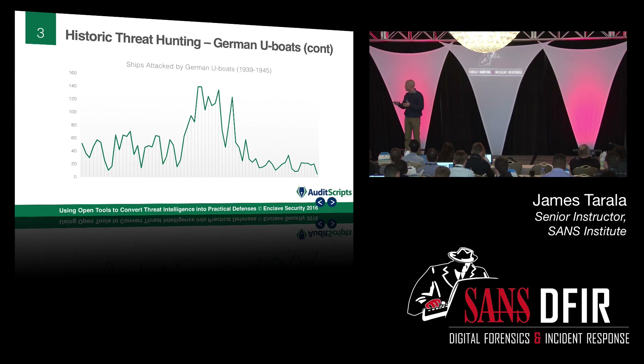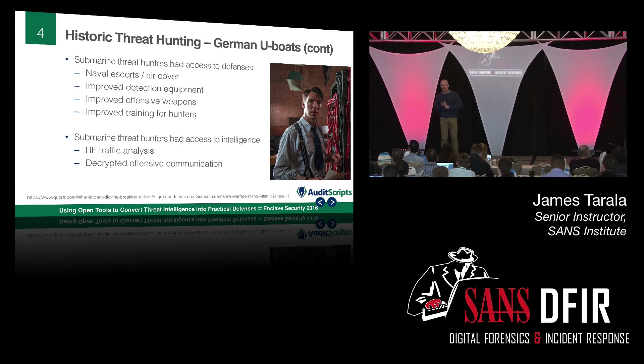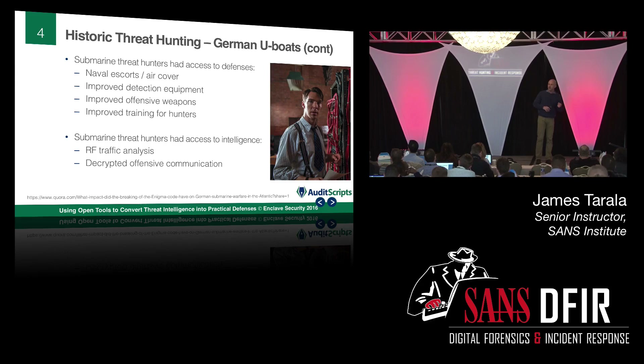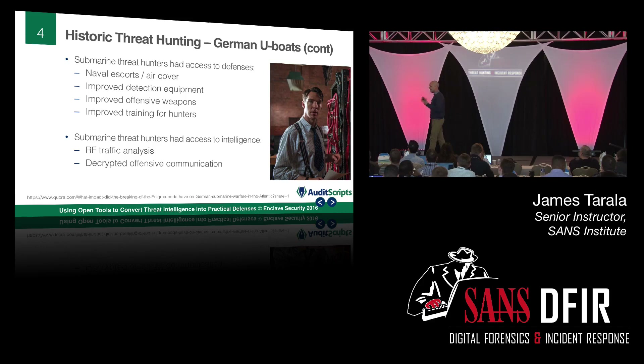Most historians agree something in May 1943 happened that caused a change. Attacks dropped from almost 200 per month down to about 20. A lot of people want to give Benedict Cumberbatch — or Alan Turing — credit for that. What Turing did on the fourth-rotor Enigma systems was amazing, but it was more than just intelligence that led to the success of the Allied ships.